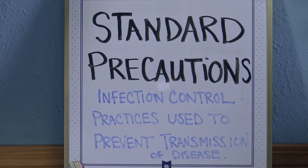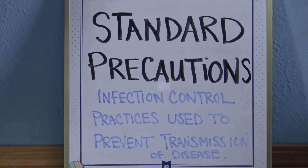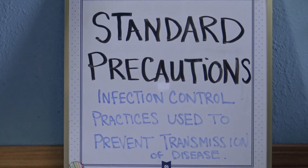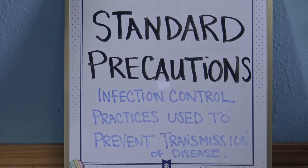Standard precautions — standard precautions are also called universal precautions. These are basic healthcare infection control practices used to prevent transmission of disease, such as gloves, masks, and hand washing. Standard precaution is universal infection control.